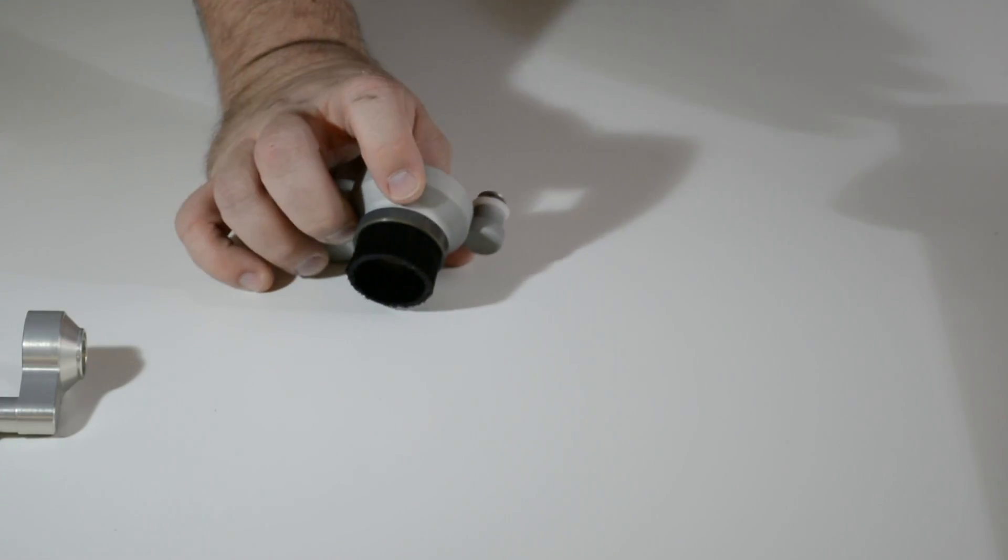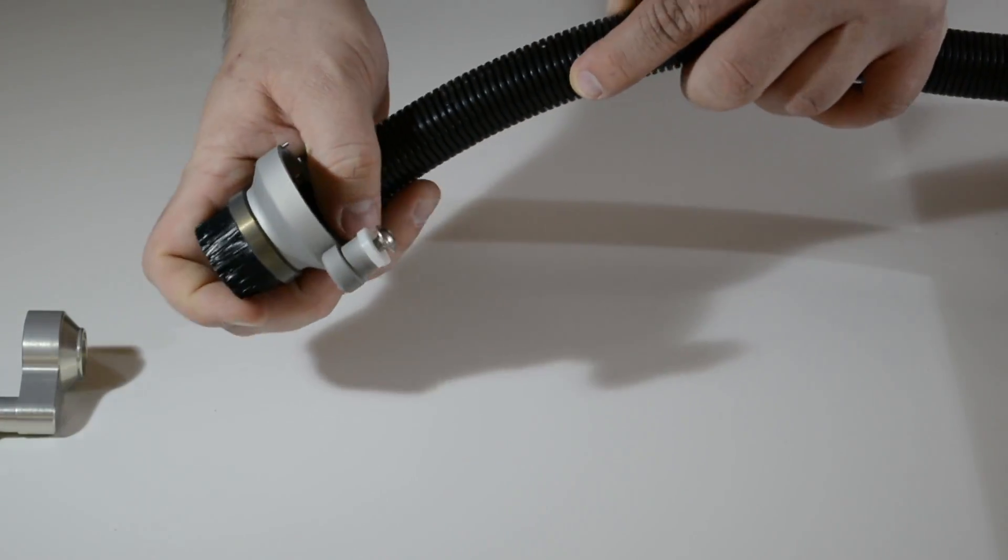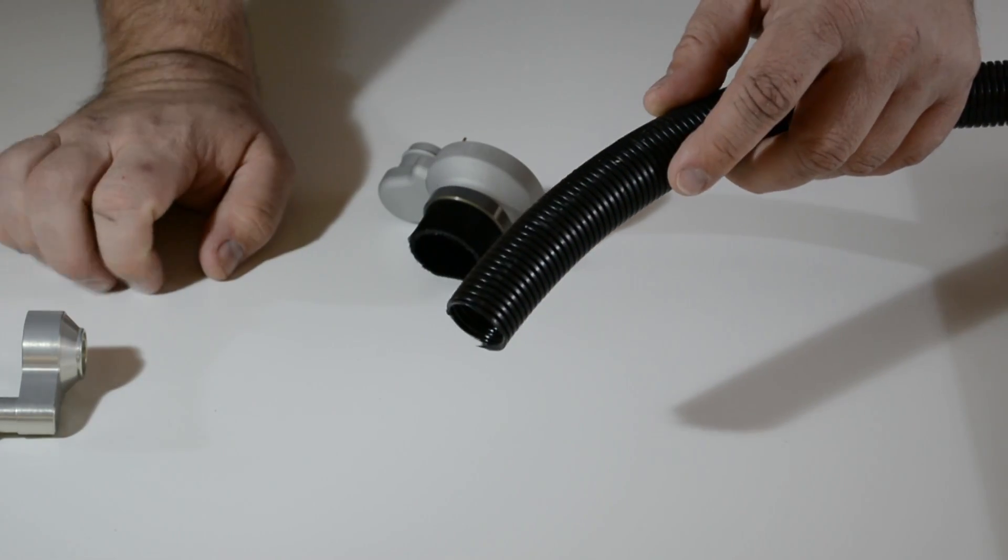So both adapters do come with a flexible hose that you can attach right to the adapter, and the other end you connect to your shop vac.